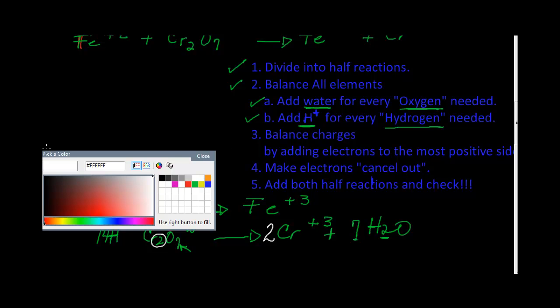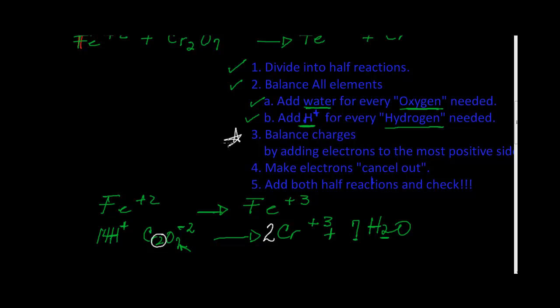Step three is where a lot of people make mistakes, so let's be careful. We are simply going to consider charges — just like masses on every atom, charges have to be addressed and balanced. We look at both sides of the arrow. On the first half-reaction, we have a charge of plus two on the left (Fe²⁺) and plus three on the right (Fe³⁺), so they're not balanced. I am going to balance the charges by adding electrons to the most positive side. Plus three is more positive, so I will add one electron to the right. Now I have plus three minus one equals plus two, matching the plus two before the arrow.